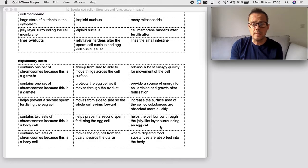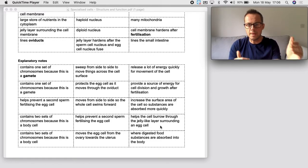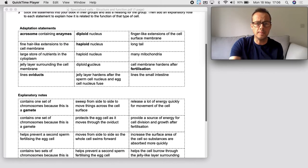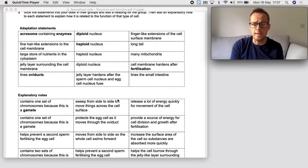And the reason, the explanation for that is the acrosome contains enzymes and this helps the cell burrow through the jelly-like layer surrounding the egg cell. So you would match those three things up: sperm cell, acrosome, help the cell burrow through the jelly-like layer surrounding the egg. And you'd link all of these adaptation statements to an explanation.